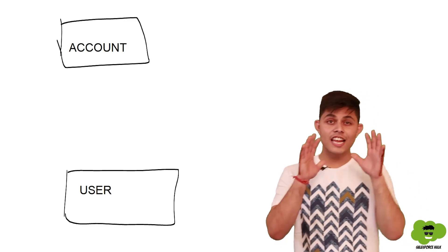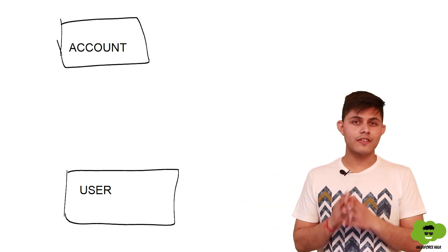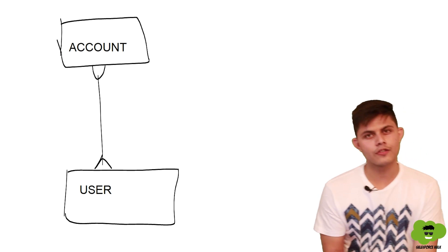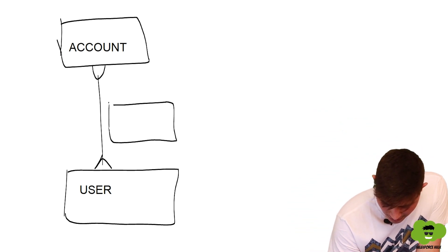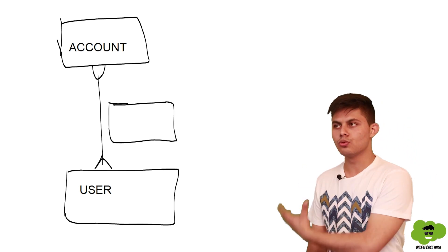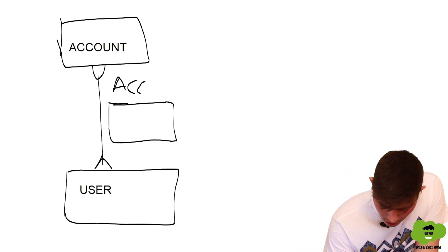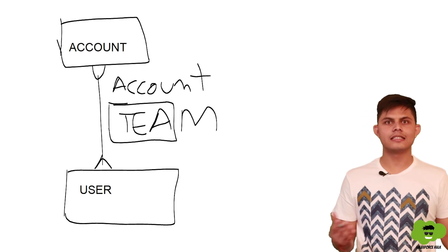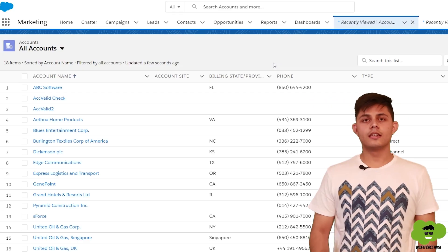Now let's understand the underlying architecture of account teams. Account is an object and User is also an object. A single account can have multiple users, and a single user can be assigned to multiple accounts — so the relationship between Account and User is many-to-many. Whenever there is a many-to-many relationship, we need a junction object, and that junction object is called Account Team.